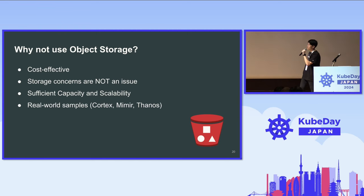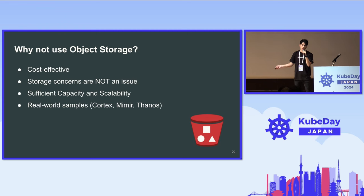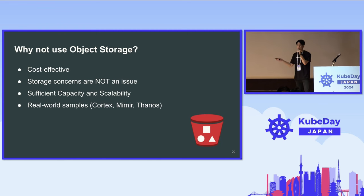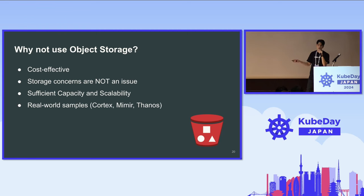Then why not use object storage? This is a really effective way to accommodate a huge amount of data. By delegating storage concerns — like replication, backup, and clustering — to object storage, we don't have to implement them ourselves. There is an S3-compatible service in our private cloud, which has sufficient capacity and scalability.